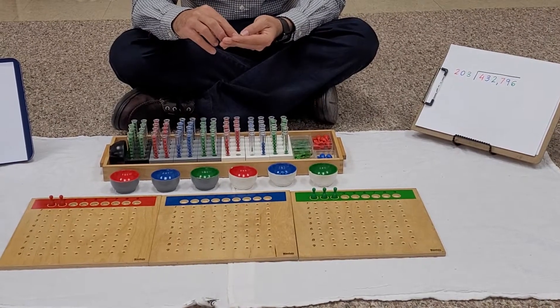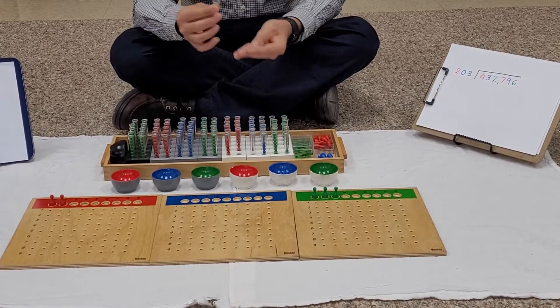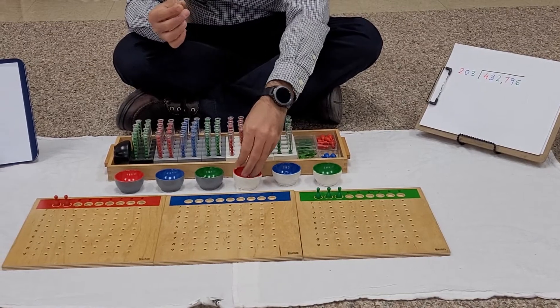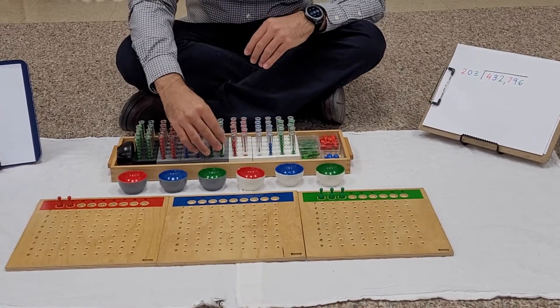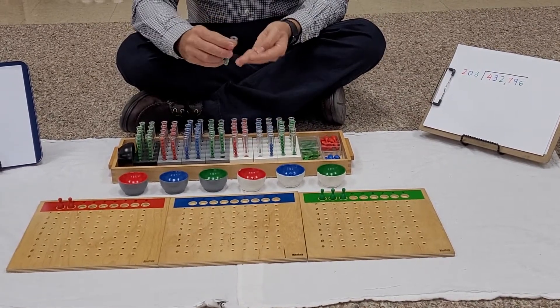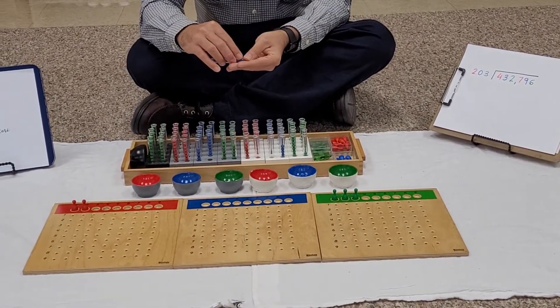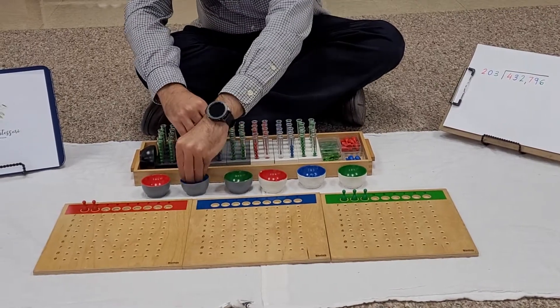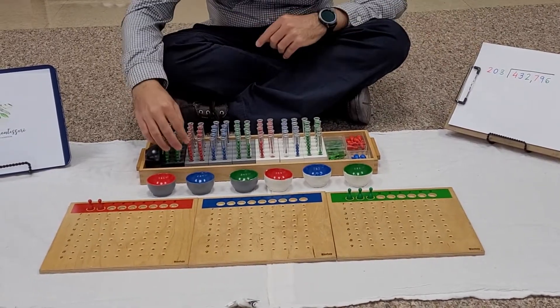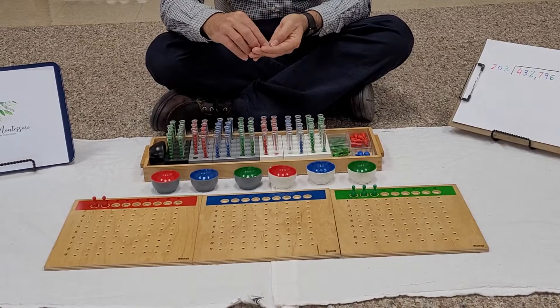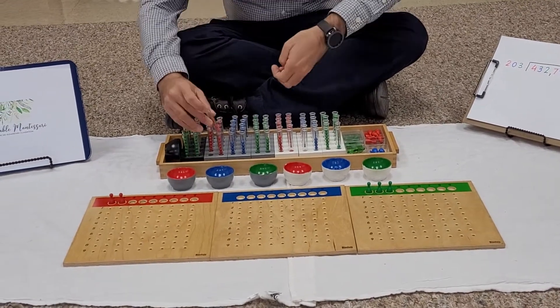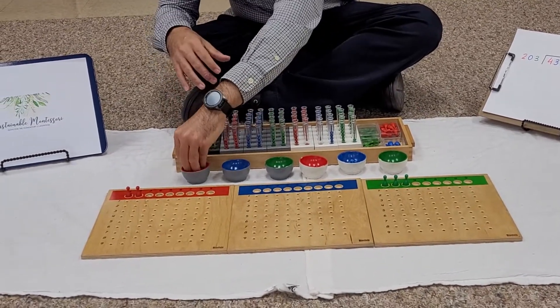Two thousands, three ten thousands, and finally four hundred thousands.